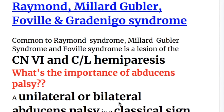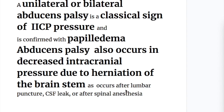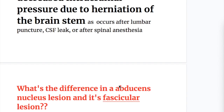Common to Raymond, Millard-Gubler, and Foville syndrome is a lesion of the sixth cranial nerve and contralateral hemiparesis or hemiplegia. A unilateral or bilateral abducens palsy is a classical sign of increased intracranial pressure and is confirmed with papilledema and other neurological signs. Abducens palsy also occurs in decreased intracranial pressure due to herniation of the brain stem, as occurs after lumbar puncture, CSF leak, or after spinal anesthesia.